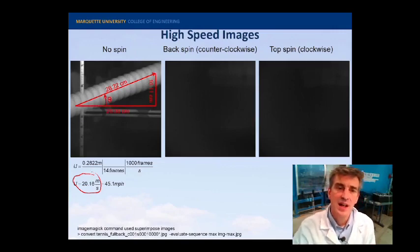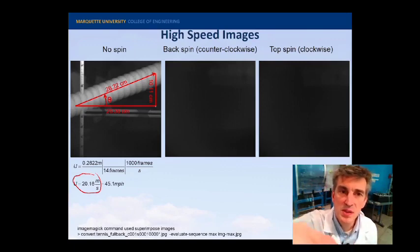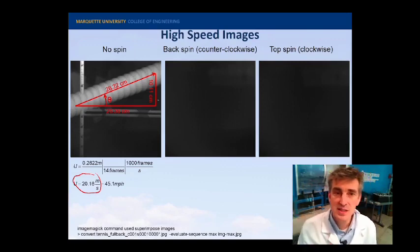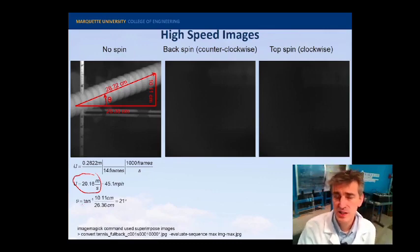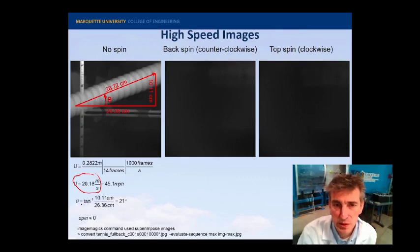If I want to know the launch angle, I can do pretty much the same thing. I know what the x and y distances traversed over this time record are. And so, I can calculate the geometry from that. It's just a simple arc tangent of the y over x, 21 degrees. And this is for the no spin rate.